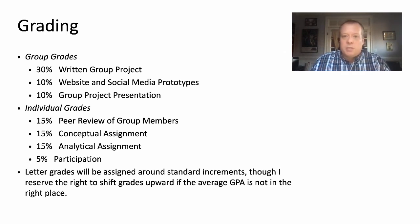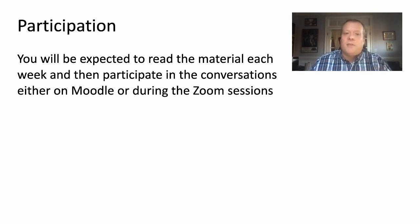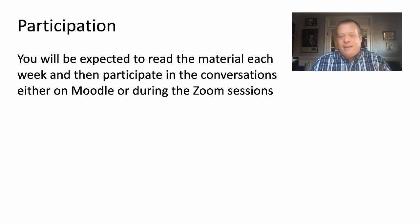The other 50% of your grade comes from your individual contributions. 15% is still related to the group project but via peer review of your own performance by your group members. Another 15% will come from a conceptual assignment early on in the class covering concepts related to the course. Another 15% will come from an analytical, more math-related and data-driven assignment about two-thirds of the way through the class. 5% will be participation, judged by your showing up for Thursday discussions and participating on Moodle.